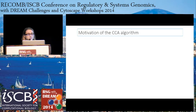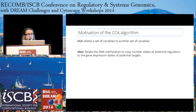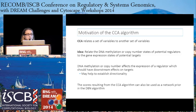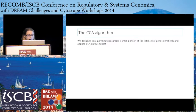CCA relates one set of variables to another set of variables. The idea here was to relate DNA methylation or copy number states of potential regulators to the gene expression states of potential targets, comparing this to just using expression for both regulators and targets. DNA methylation or copy number affects the expression of a regulator, which should have downstream effects on the targets — so compared to using expression data on both sides, we hope this may establish directionality, acting as a perturbation on the regulator. The scores from the CCA algorithm are suitable to be used as a prior for the dynamic Bayesian network algorithm. The algorithm resamples a small portion of the total set of genes iteratively and applies CCA on the subset.